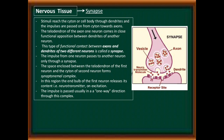The space enclosed between the telodendron of the first neuron and the cytone of the second neuron forms a synaptic complex. In this region, the end bulb of the first neuron releases its content — the neurotransmitter. On excitation, the impulse passes in a one-way direction through this complex. The vesicles containing neurotransmitters such as acetylcholine and noradrenaline carry the impulses between the two neurons. The nature of nerve impulse is electrochemical.